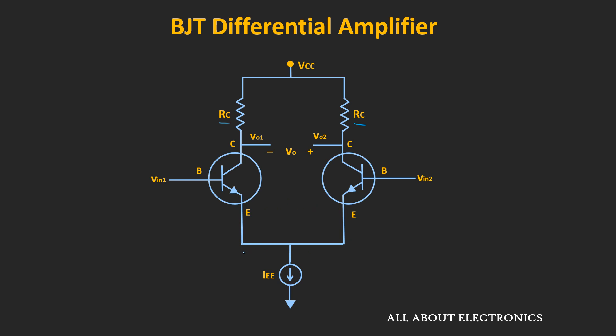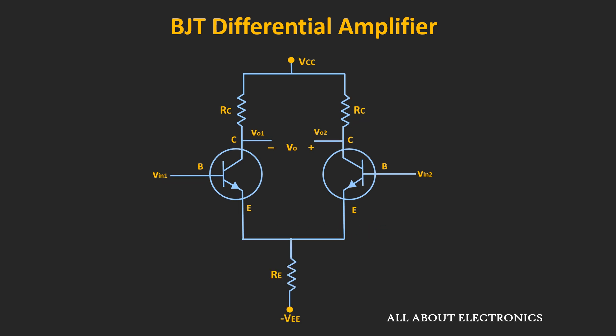As you can see, the emitter of both transistors is tied together to the constant current source. In integrated circuits, it is possible to match these two transistors as well as the collector resistors, and in that case this constant current source is designed using the current mirror. But when this circuit is designed using discrete components, there will be some mismatch between the transistor pair, and in that case the emitter can be biased differently.